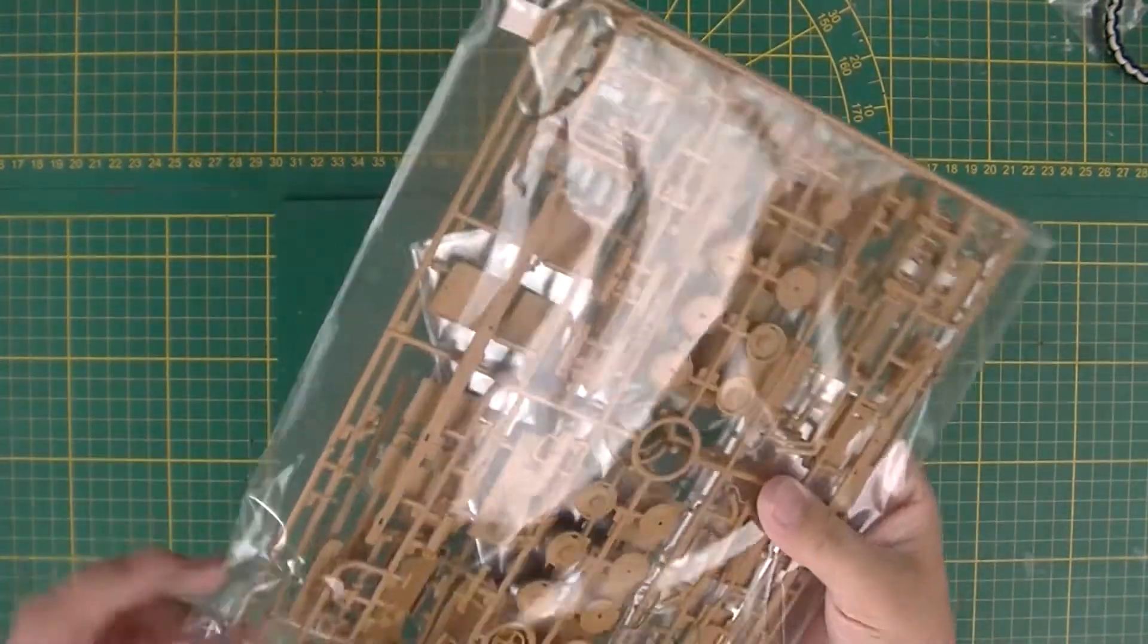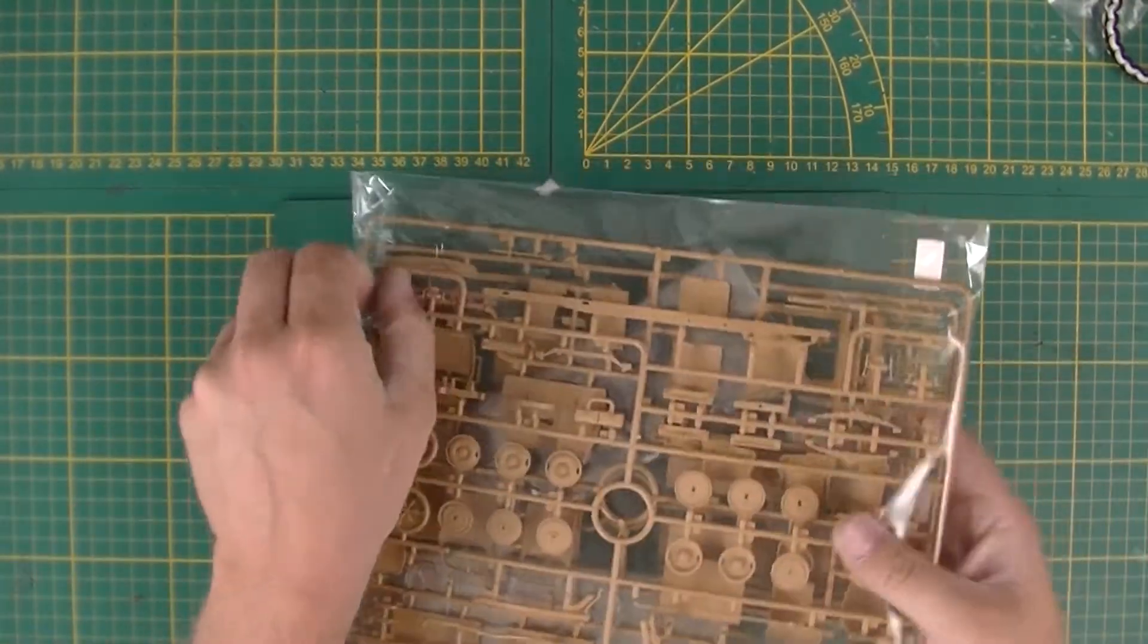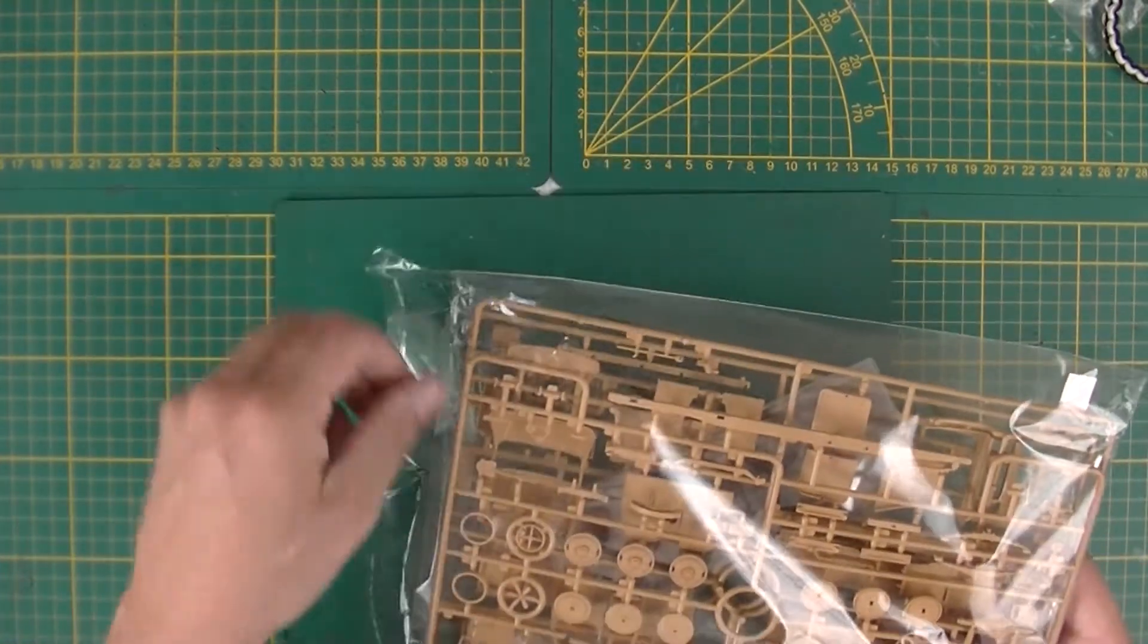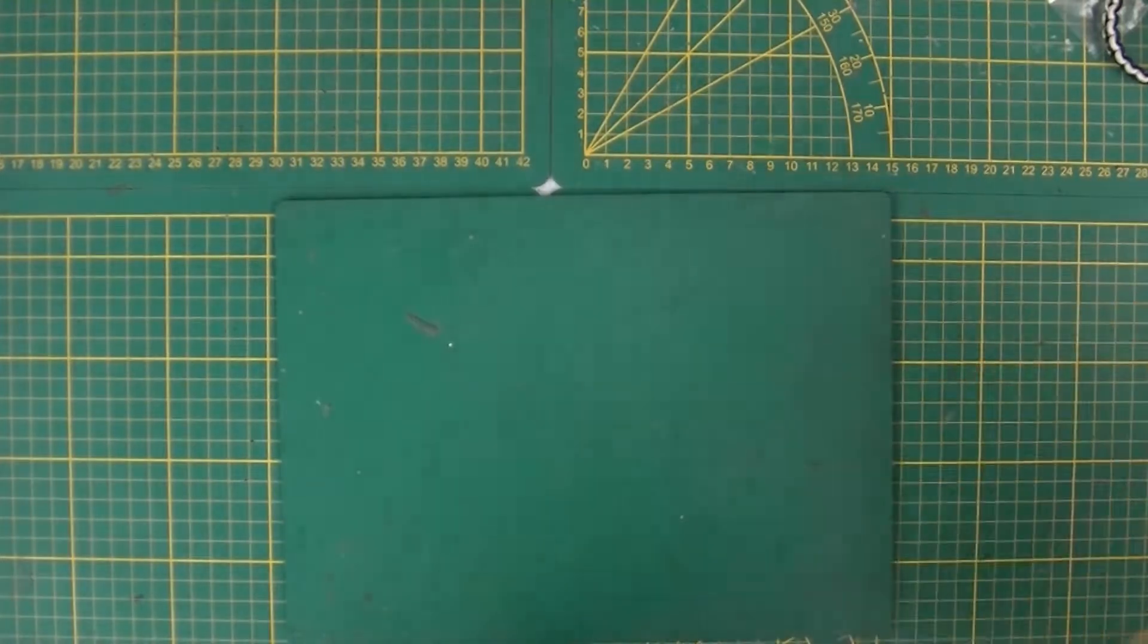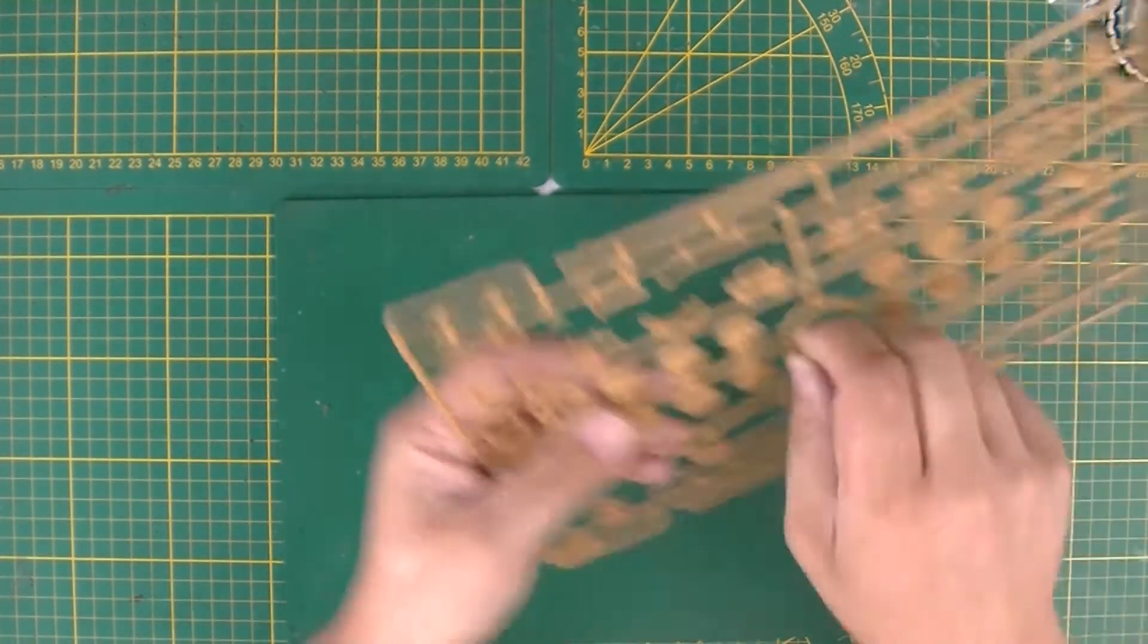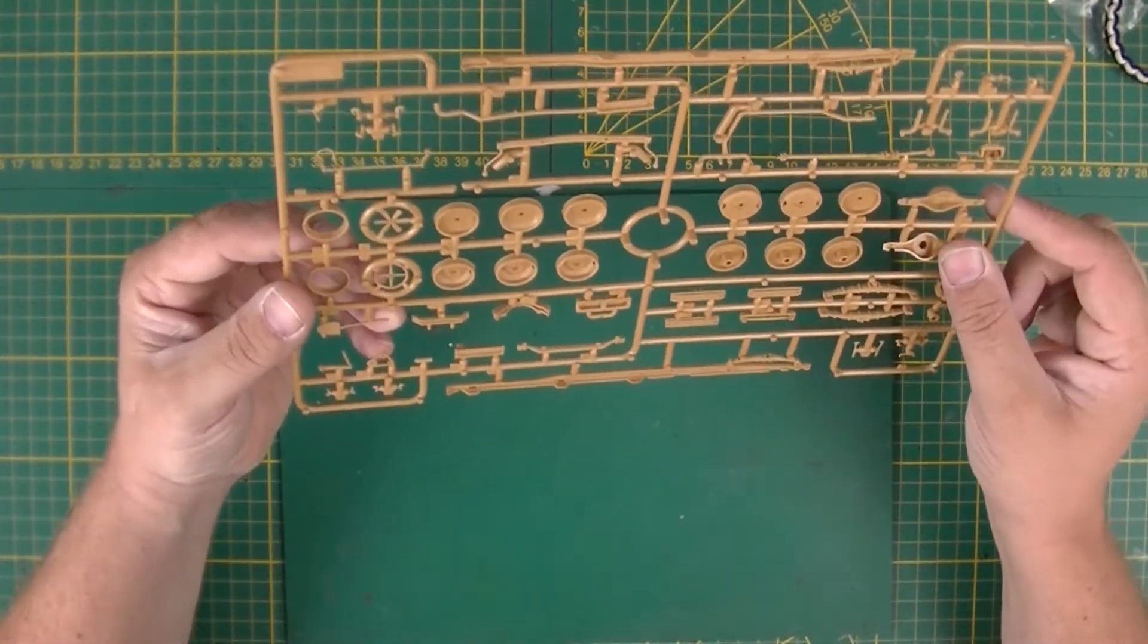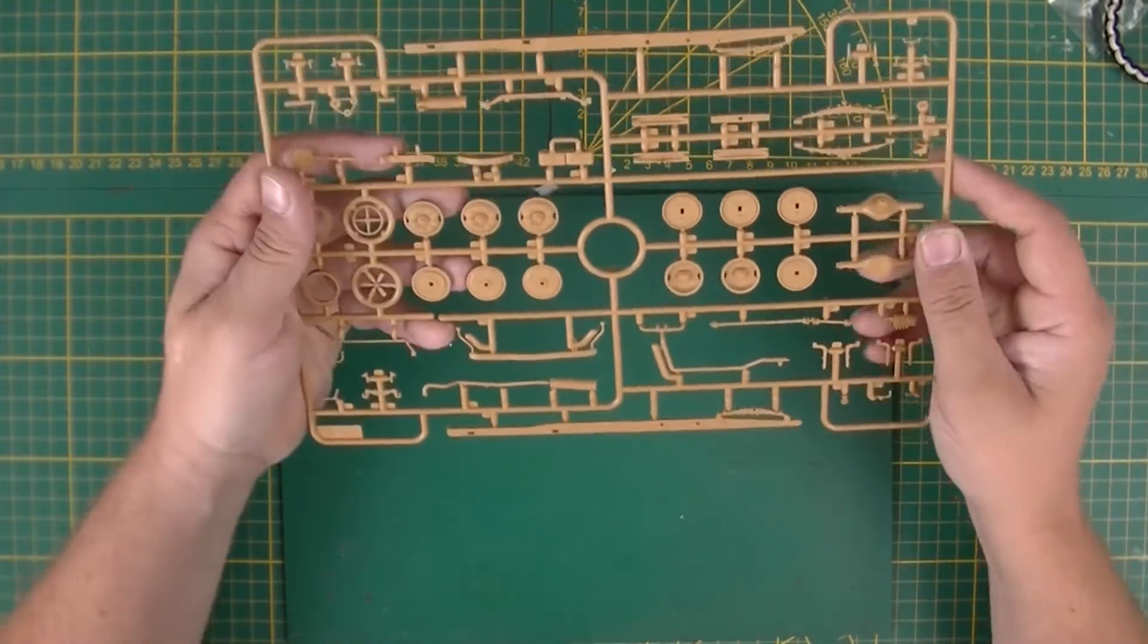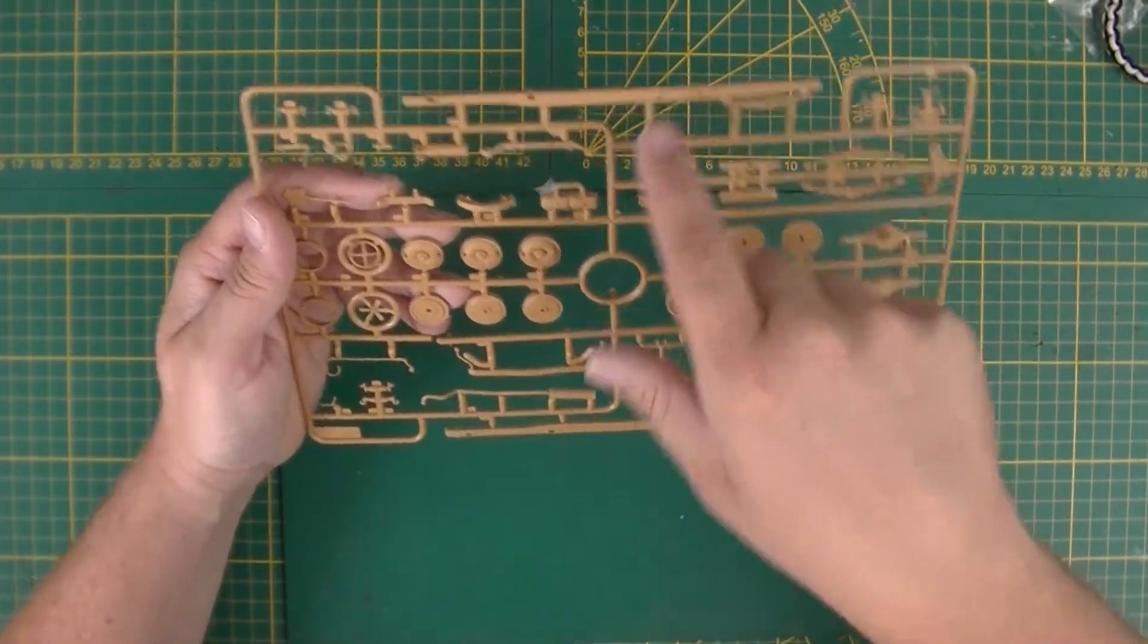Just packed in there. It's one big bag, a resealable bag but that's also a good thing. Put these to the side. Let's start with the base colored sprues. This is sprue A.